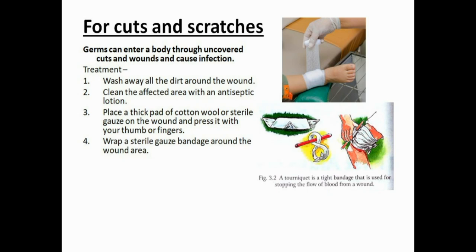For cuts and scratches, germs can enter the body through uncovered cuts and wounds and cause infection. Wash away all the dirt around the wound and clean the affected area with an antiseptic lotion. Then place a thick pad of cotton wool or sterile gauze on the wound and press it with your thumb or fingers. Wrap a sterile gauze bandage around the wound area. A tourniquet is a tight bandage used to stop the flow of blood from a wound.